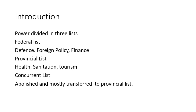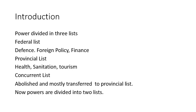After the 18th Amendment, the concurrent list is abolished and most subjects from it were transferred to the provincial list. So after the 18th Amendment, practically we have only two lists: the Federal List and the Provincial List. Thank you for joining, take care, goodbye.